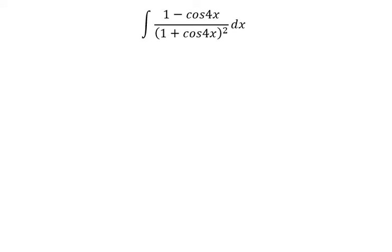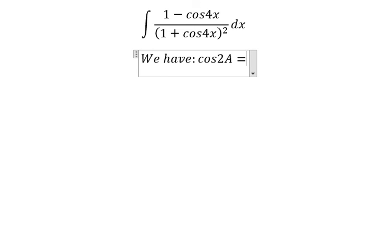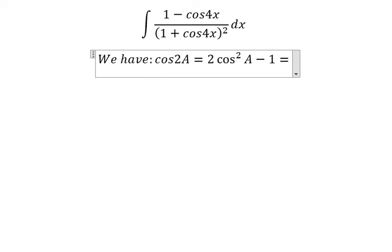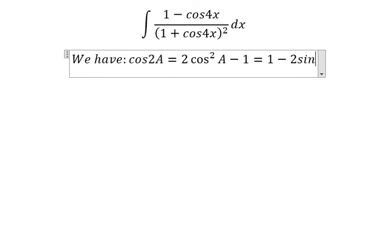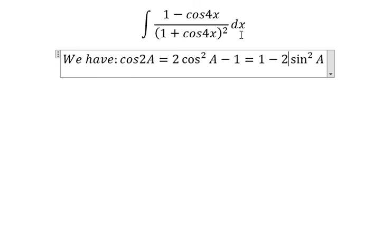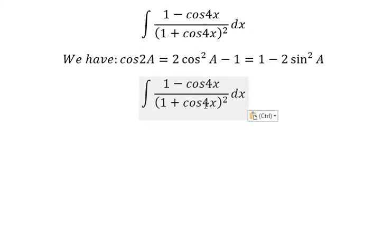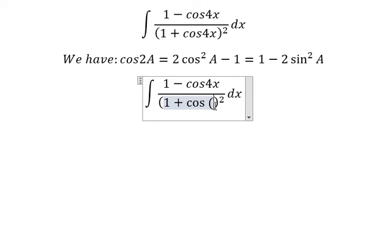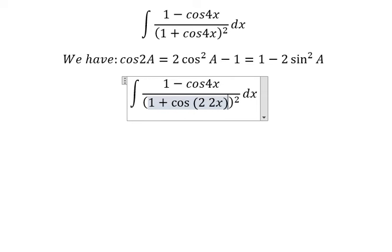Hello everybody. Today I will talk about calculus. The topic today is about integration. Now I will show you how to answer. We have the formula here: cosine 2a equals 2 cosine squared x minus 1, and 1 minus 2 cosine squared x. We know that for 4x, that is about the number 2 multiplied by 2x.